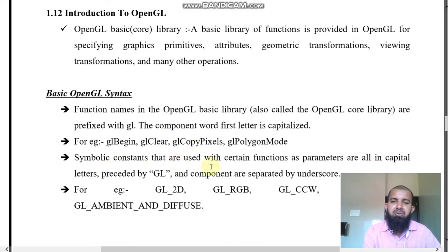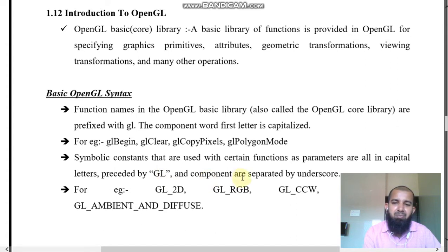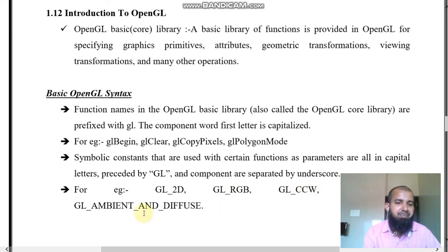Symbolic constants that are used with certain functions as parameters are all in capital letters preceded by GL, and components are separated by underscore. For example: GL_2D, GL_RGB, GL_CCW, GL_POLYGON, GL_AMBIENT_AND_DIFFUSE. These are some common symbolic constants used with certain functions as parameters.